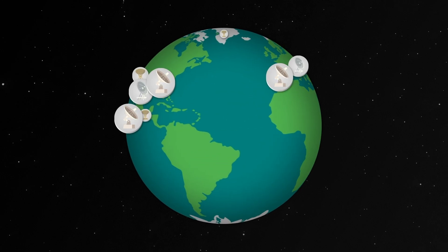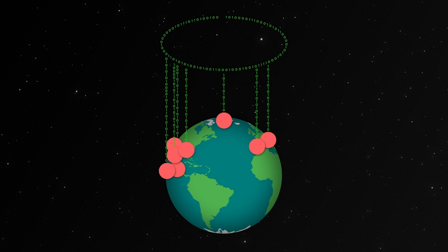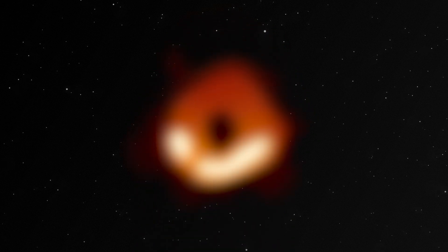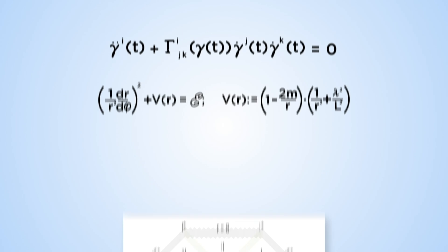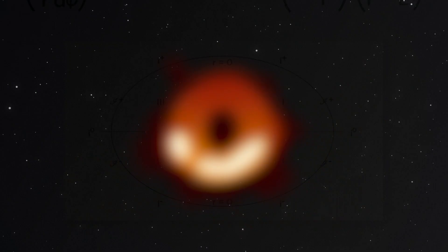In 2019, the Event Horizon Telescope successfully imaged the shadow cast by a black hole for the first time. But mathematicians had already been visualizing them for decades.